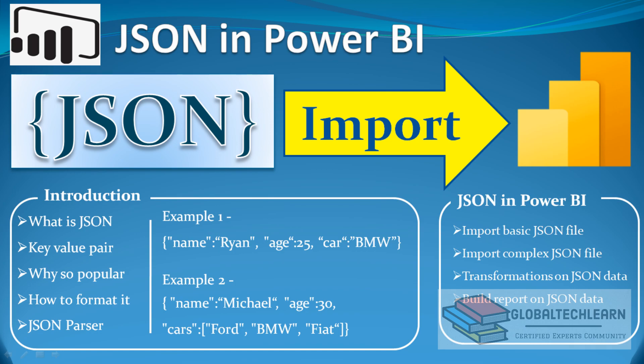In the first example, 'name' is the key and 'Ryan' is the value. Similarly, 'age' is the key and 25 is the value. For 'car', the key has the value 'BMW'. If we club all three keys with their values and enclose them within curly brackets, that makes it the JSON structure — simple and easy to understand.